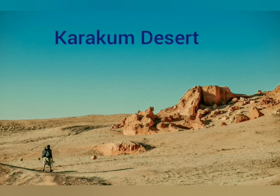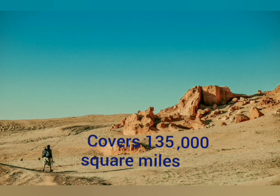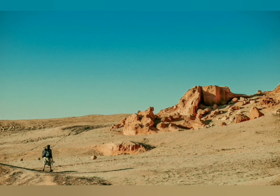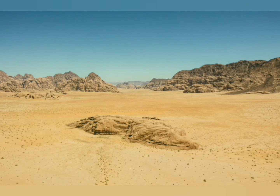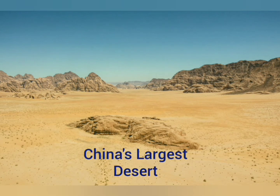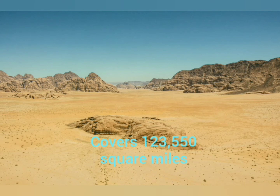Karakum Desert — The Karakum Desert covers 1,35,000 square miles. It occupies about 70% of the area of Turkmenistan. Taklamakan Desert — This is the largest desert of China. It covers 1,25,550 square miles.